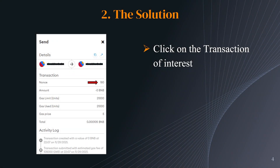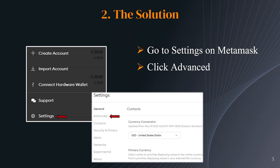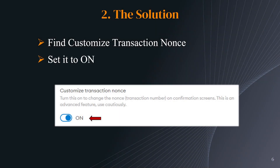Here's how to solve it. Click on the pending transaction of interest and write down the nonce value for that transaction — you're going to need this afterwards. Now go to Settings on MetaMask and click on Advanced.